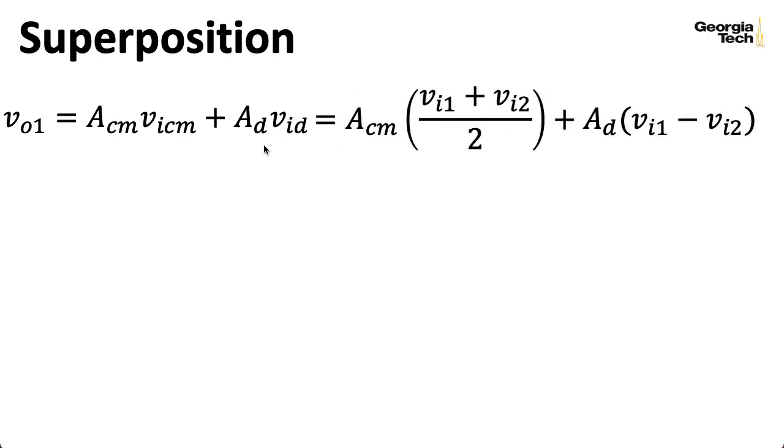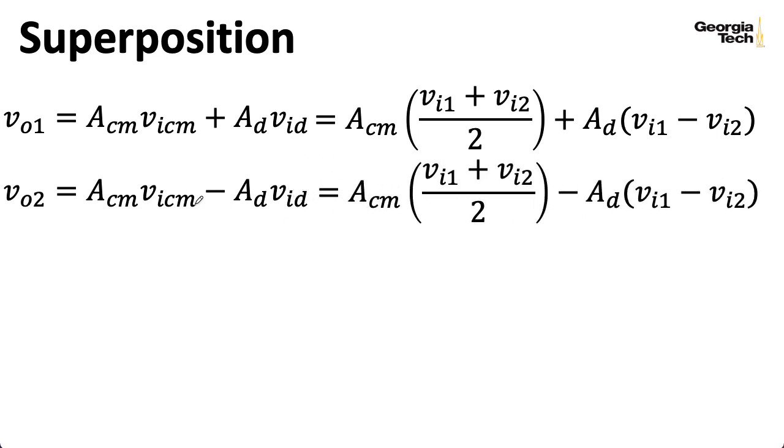Now I can invoke the power of superposition. So we've been computing everything associated with the output on the left. And in general, I can say that it's the common mode input times the common mode gain, plus the differential mode input times the differential mode gain. Now, if I substitute in the expressions for the common mode and differential mode gain, in terms of the actual inputs one and two, I get something that looks like this. Now, what about the other output? What about the output on the right? Well, all I really need to do is switch the sign on the second term, because of the sort of anti-symmetry associated with the differential mode input.